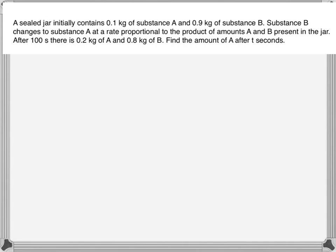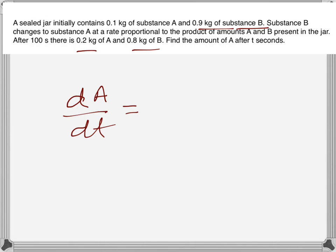A sealed jar initially contains 0.1 kilogram of substance A and 0.9 kilogram of substance B. Substance B changes to substance A at a rate proportional to the product of the amounts of A and B present in the jar. After 100 seconds there is 0.2 kilogram of A and 0.8 kilogram of B. Find the amount of A after t seconds. The rate of increase of A is proportional to the product of A and B.